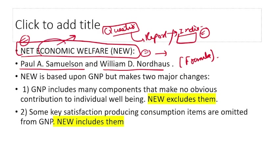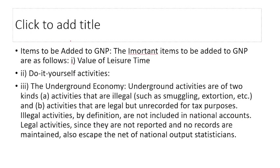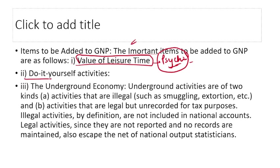Net Economic Welfare starts from GNP but modifies it — adding and subtracting certain items. GNP does not tell us about crime or pollution, which hinder social development. So some items were excluded and others included to create Net Economic Welfare. Items added include value of leisure time — which is necessary for psychic development — and do-it-yourself (DIY) activities.